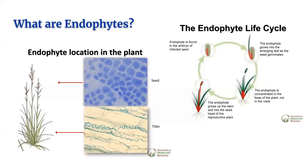The endophyte of tall fescue is a fungus that grows between the plant's cells. It can only be seen with a microscope. Here we have a diagram of the endophyte's life cycle. It is important to remember that since the endophyte spreads via seed, endophyte-infected plants will always produce endophyte-infected seed.